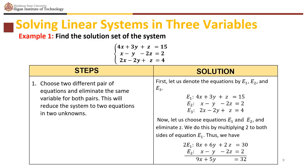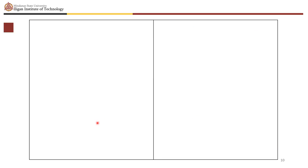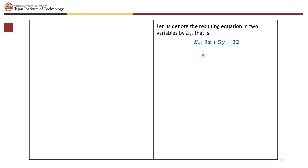Choose equations e sub 1 and e sub 2 and eliminate z. Multiply 2 to both sides of e sub 1 to get 8x plus 6y plus 2z equals 30. Adding e sub 2, which is x minus y minus 2z equals 2, we get 9x plus 5y equals 32. Denote this resulting two-variable equation as e sub 4: 9x plus 5y equals 32.